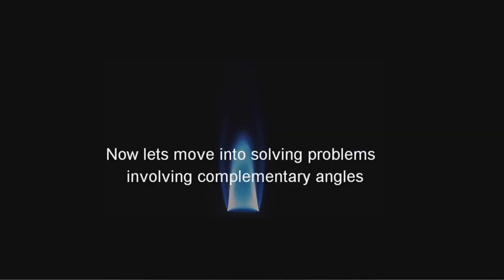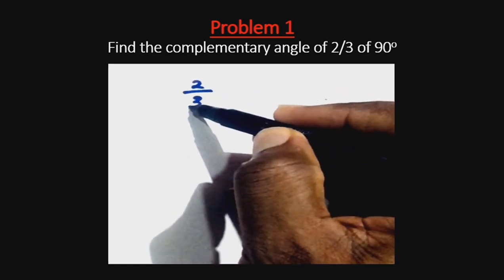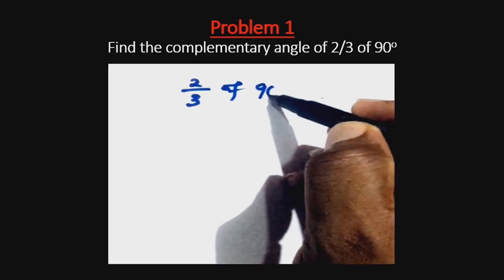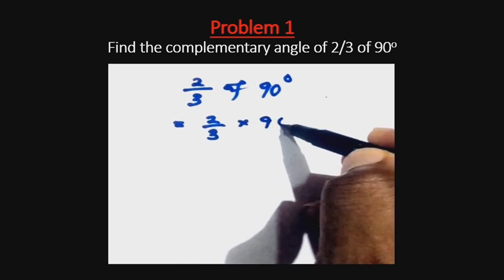Now, let's move into solving problems involving complementary angles. The first problem says: find the complementary angle of 2/3 of 90 degrees. First, we must know what 2/3 of 90 degrees represents. 2/3 of 90 degrees is the same thing as 2 over 3 times 90.